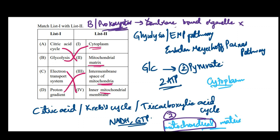Then where do these processes — citric acid cycle and electron transport system — occur in prokaryotes? Remember that whether it is prokaryote or eukaryote, glycolysis occurs in the cytoplasm. In prokaryotes, the citric acid cycle also occurs in the cytoplasm only, whereas in eukaryotes it takes place in the mitochondrial matrix. And electron transport system in prokaryotes takes place in the plasma membrane, which is the outer boundary of the cell.